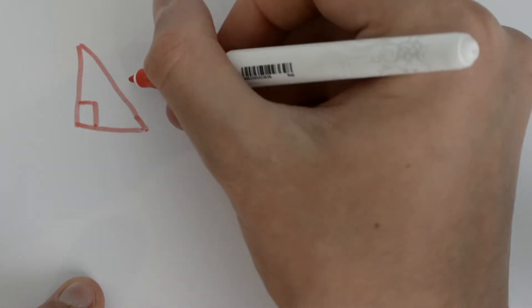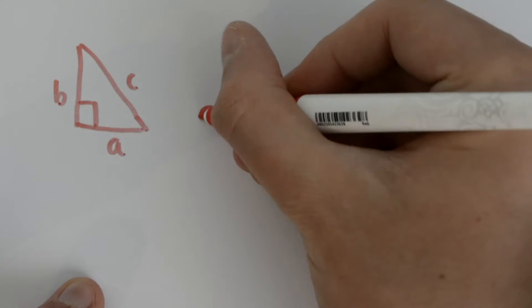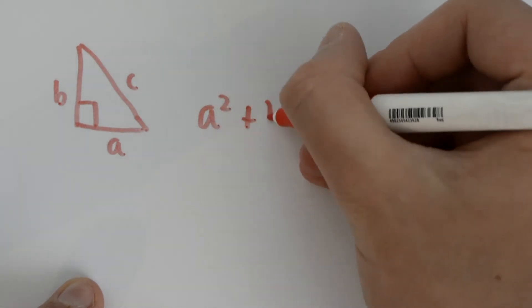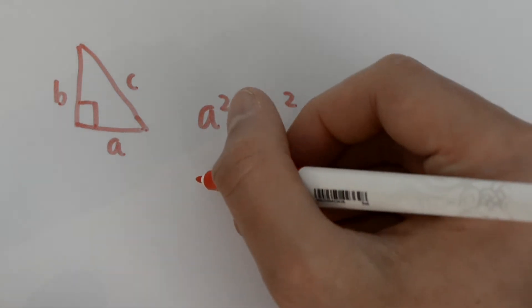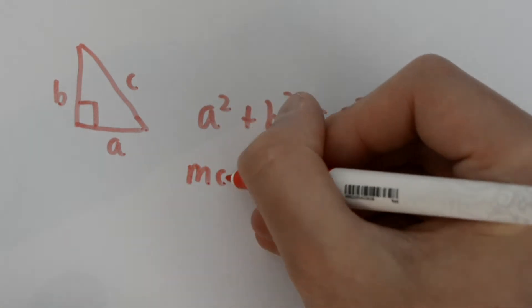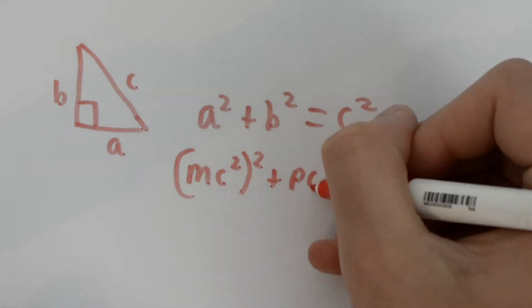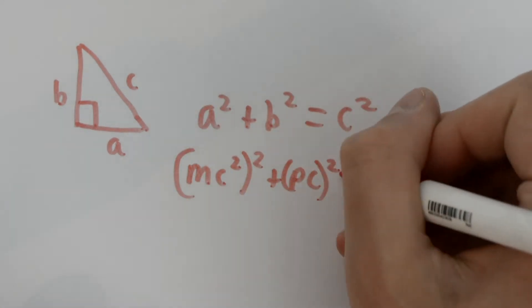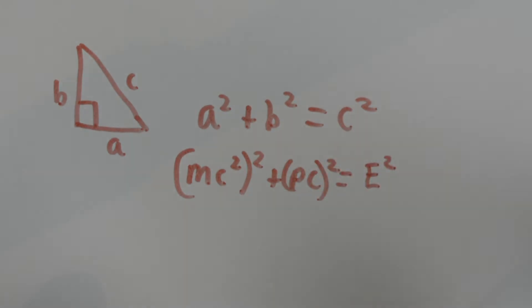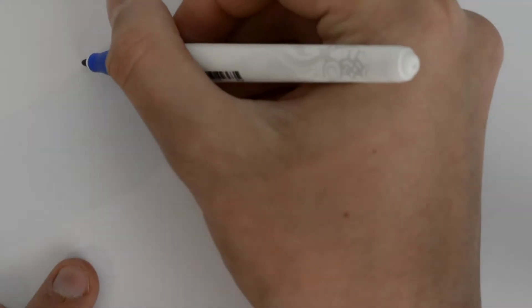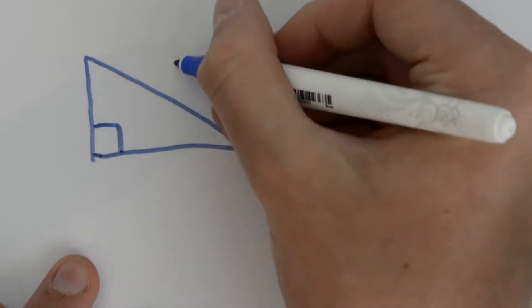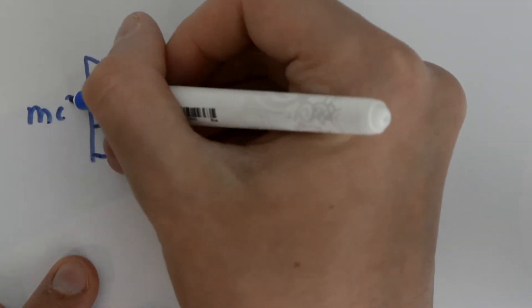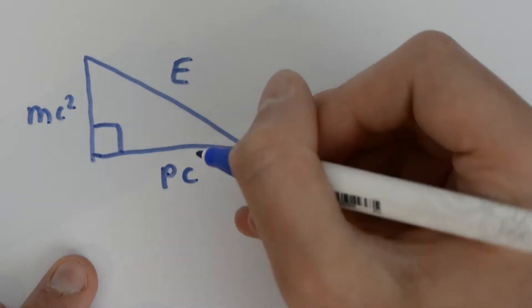That's because it's the same type of equation used to describe a triangle: a squared plus b squared equals c squared, where c is the hypotenuse — the longest side of a right-angled triangle. We can even put our equation into a triangle where energy is the hypotenuse, and the other sides are mc squared and pc respectively. So mc squared squared plus pc squared equals E squared, just as a squared plus b squared equals c squared.